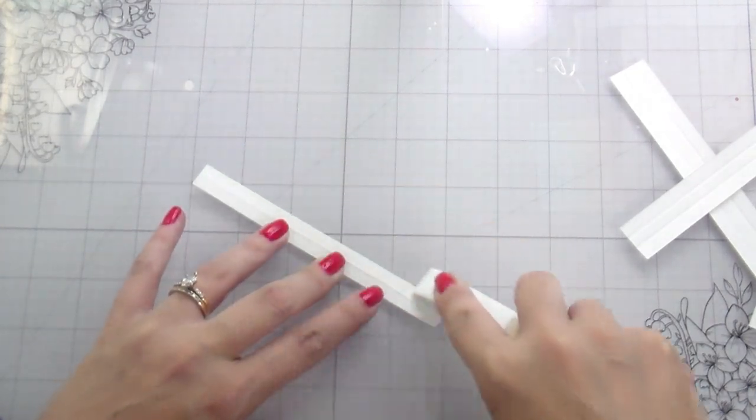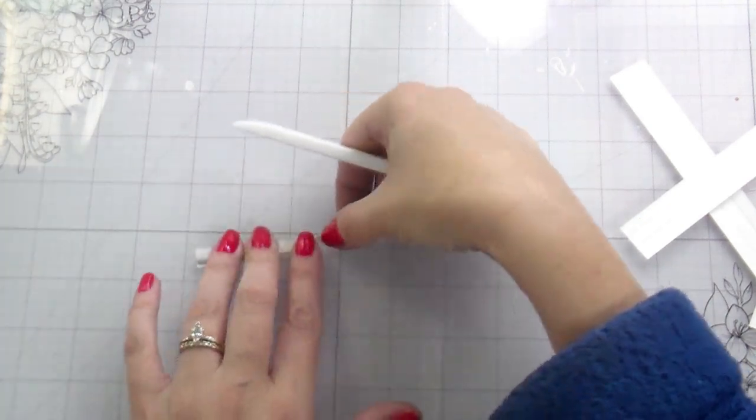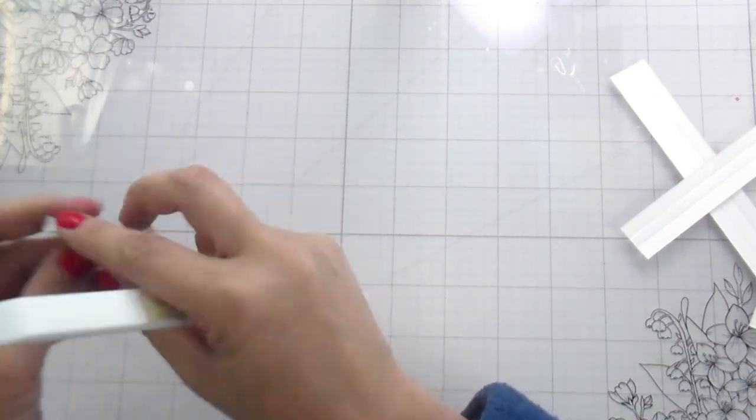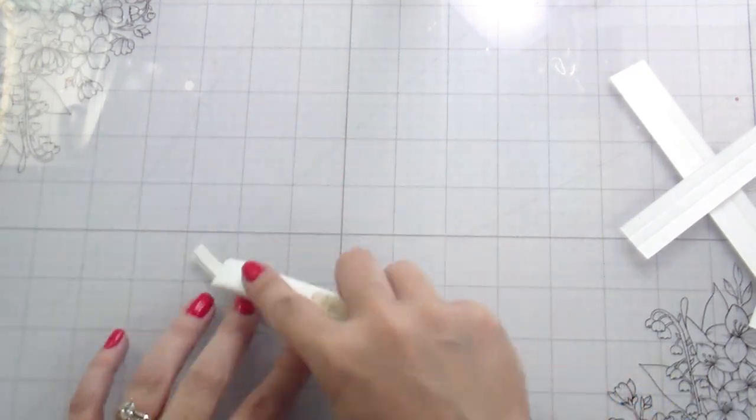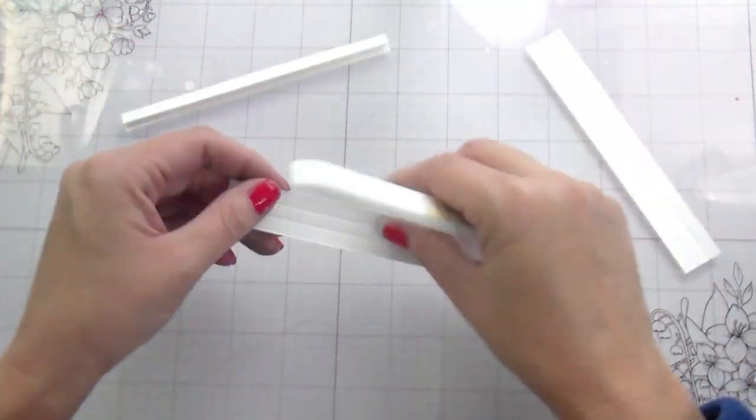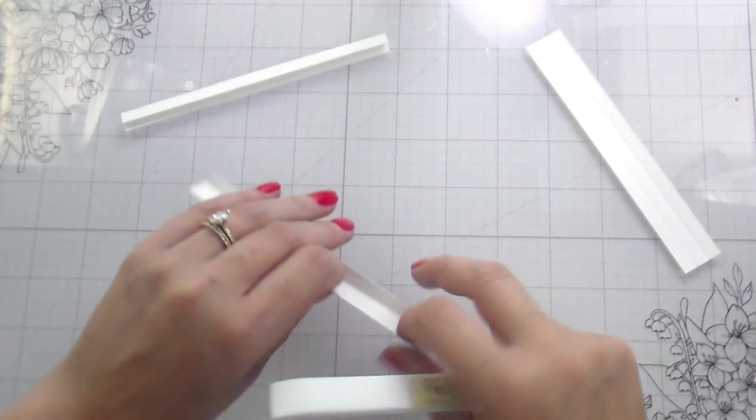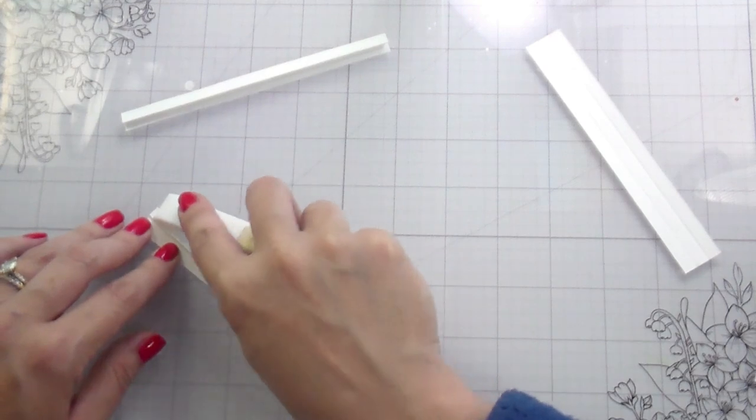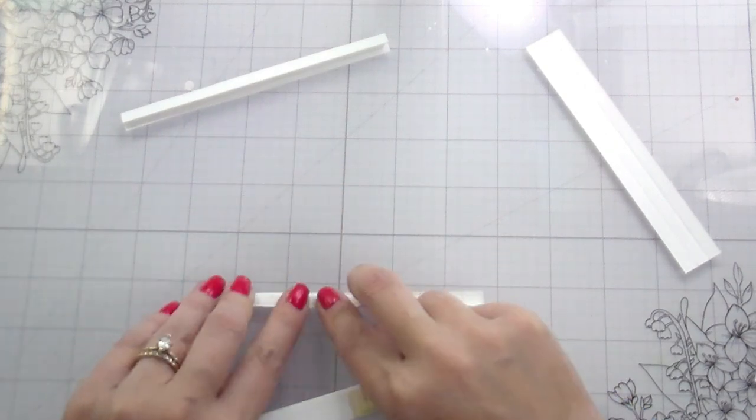And you're just going to want to push them down really well with your bone folder. Honeybee has two different sizes. They have a small and a large. I have both of them. They're both great. The Teflon bone folder, this was all the rage several years ago. And the reason is because it doesn't leave any shininess on your dark cardstock. I've had them since they came out and they still work perfectly for all of my scoring needs.